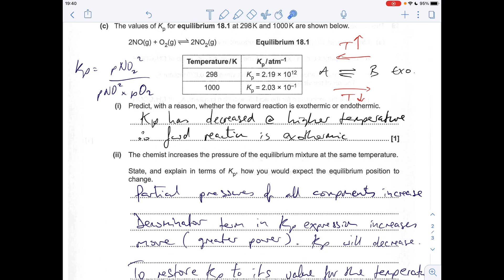Because there's a greater power effectively on this denominator term—you've got squared times to the power one, so effectively cubed on the bottom and only squared on the top. So when all the partial pressures increase, the denominator term in the Kp expression increases more.